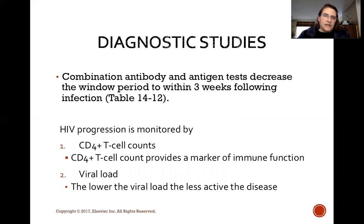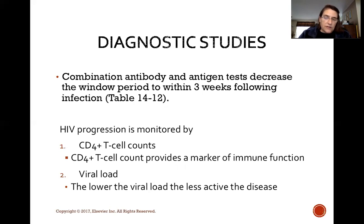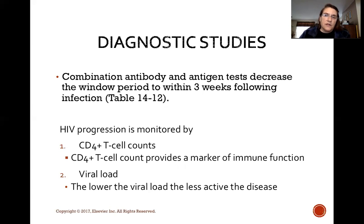For diagnostic studies, refer to Table 14-12 for the fourth-generation antigen-antibody testing. HIV progression is monitored by CD4+ T cell counts, which give us a marker of immune function, and by viral loads. The lower the viral load, the less active the disease. If the viral load is undetectable, that's good — but the patient still has HIV and will never be cured.